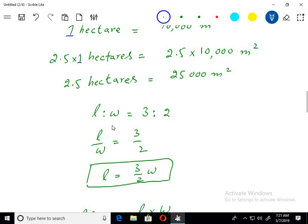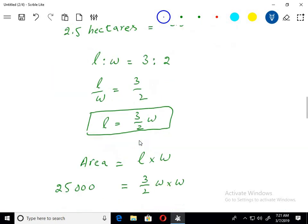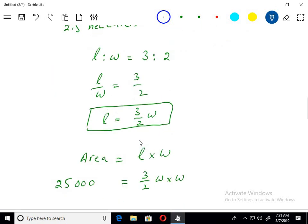Ratio of length and width is given as 3:2. So L over W equals 3 over 2. Taking W to the other side, L equals 3 over 2 W.